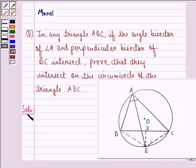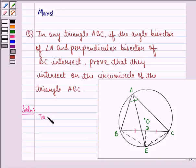First of all, let us see what is given to us. We are given a triangle ABC inscribed in a circle with center O. E is a point on the circle such that AE is the internal bisector of angle BAC. That means angle BAE is equal to angle CAE. We also have that D is the midpoint of BC, which means BD is equal to CD. Now what we have to prove is that DE is the right bisector of BC.